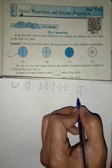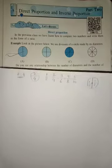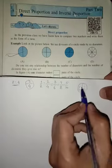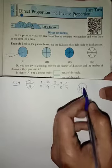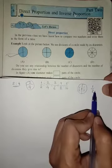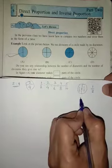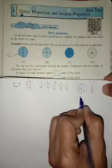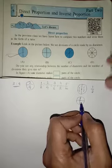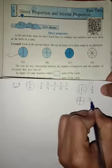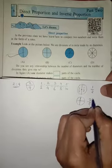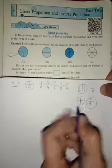You already learned diameter, chord, and radius in the properties of a circle. So this is the 1 by 2 proportion. Now if we take two diameters, the circle is divided into 4 equal parts. If we take two diameters, the circle will be divided into 4 parts — so it is 2 by 4. This is the proportion. Hope you understand.